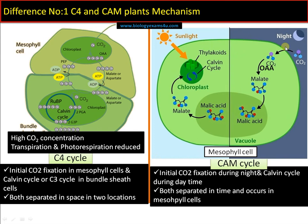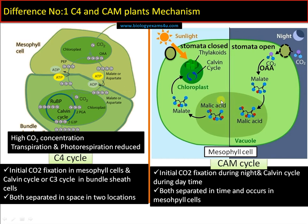In CAM plants, initial carbon dioxide fixation occurs during the night, and Calvin cycle occurs during the daytime. At night, stomata open and receive carbon dioxide. Just like in the C4 pathway, carbon dioxide is converted to oxaloacetate, then to malate, and this malate is stored in the vacuole. During daytime there is extreme high temperature, so if stomata were open, water would be lost by transpiration. Therefore stomata remain closed. The malic acid stored in the vacuole is taken out, decarboxylated, and carbon dioxide is released to run the Calvin cycle even though the stomata is closed.